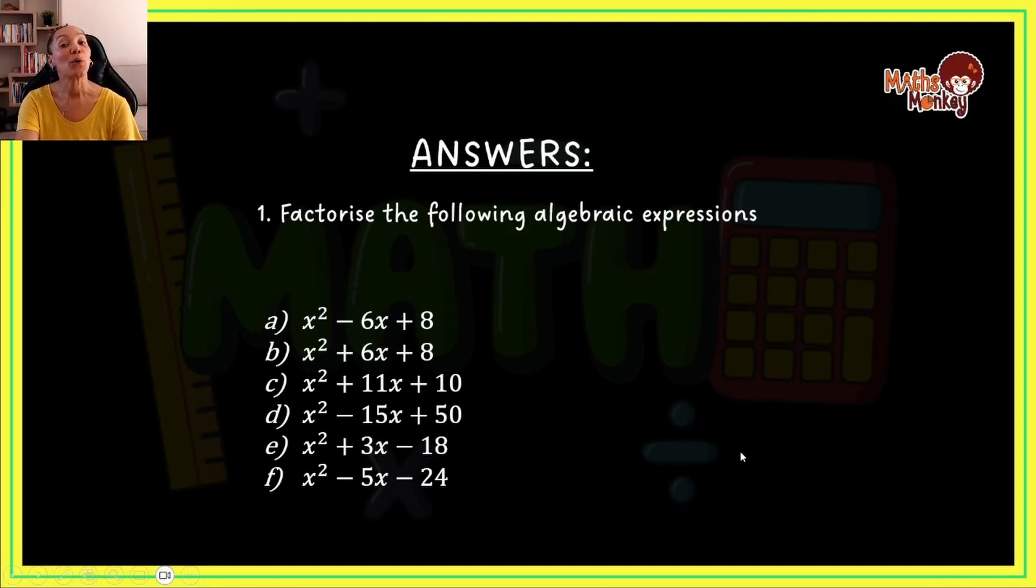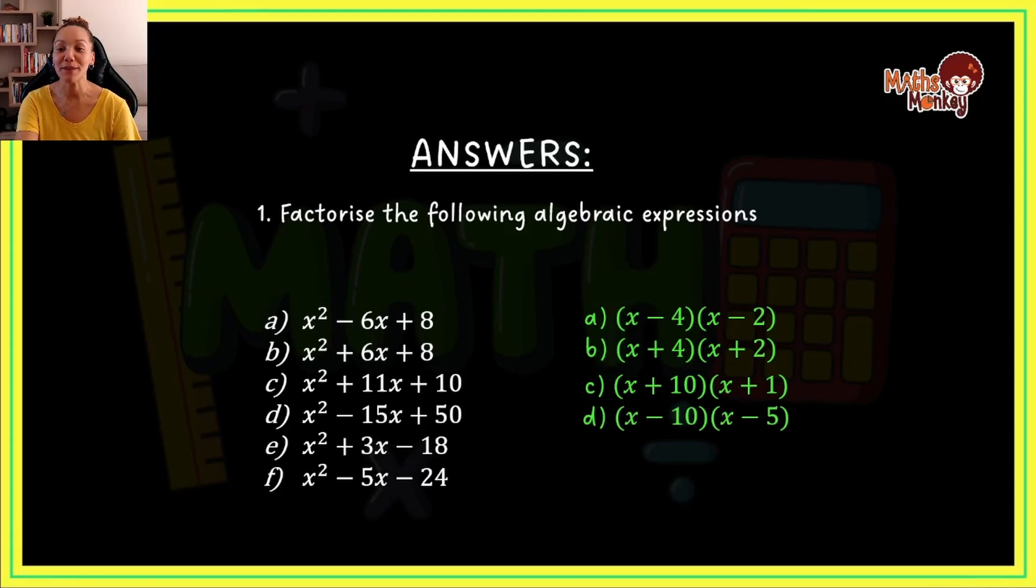Factorize the following. What were the factors you're supposed to get for A? It's x minus 4, x minus 2. For B, this was x plus 4, x plus 2. Then for C, it would be x plus 10 and x plus 1. For D, your answers should have been x minus 10 and x minus 5. E, we have x minus 3 and x plus 6. And then your last one was x minus 8 and x plus 3. So hopefully you got this right. Hopefully you are confident on how to factorize these trinomials. And remember, there shouldn't be any pluses and minuses between numbers and variables outside a bracket once you have completed factorizing. That's how you can check that you are actually done factorizing.